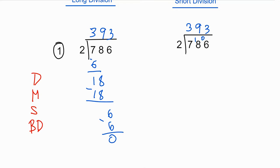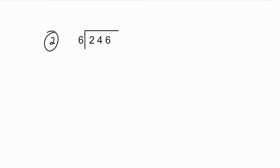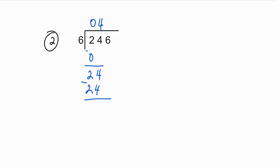Now let's have another example: 246 divided by 6. We divide 2 by 6 — 6 doesn't go into 2, so that's zero. Multiply: 0 times 6 is 0. 2 minus 0 gives you 2. Bring down the next digit, 4. 6 goes into 24 four times. 4 times 6 is 24. Subtracting that we have zero. Bring down the next digit, 6. 6 goes into 6 one time. 1 times 6 is 6. Subtracting that we have zero.